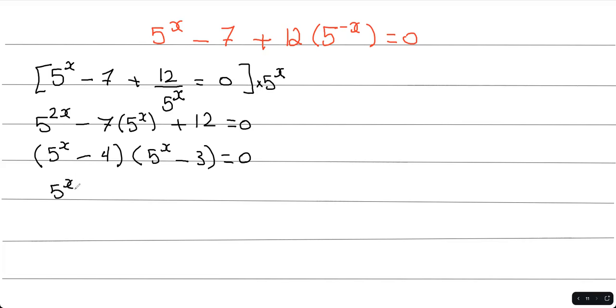Now, from here, I can see that 5 to the power of x has to equal positive 4, and 5 to the power of x has to equal 3.